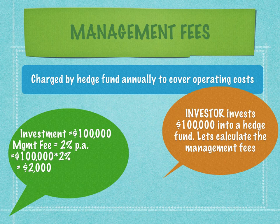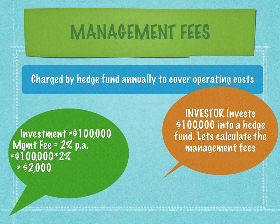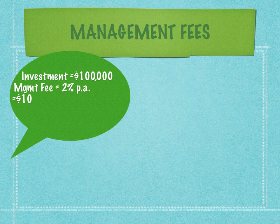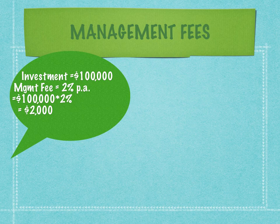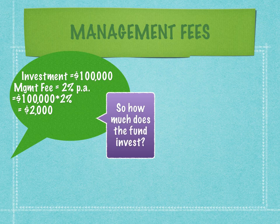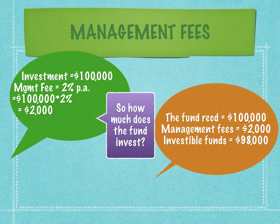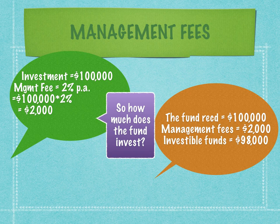The investor has invested $100,000 and the hedge fund has already collected $2,000 upfront as management fees. When the investor makes the investment, the management fee is collected at that point in time itself. With an investment of $100,000 and a management fee of $2,000, what is left for the hedge fund to invest? The hedge fund can now invest the remaining amount: $100,000 minus management fees of $2,000, giving us an investable surplus of $98,000.